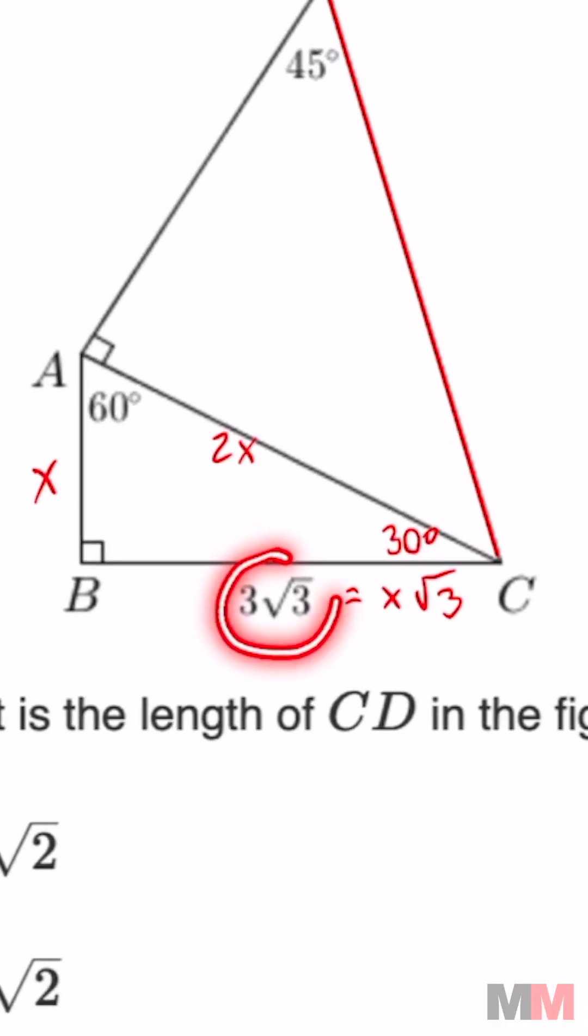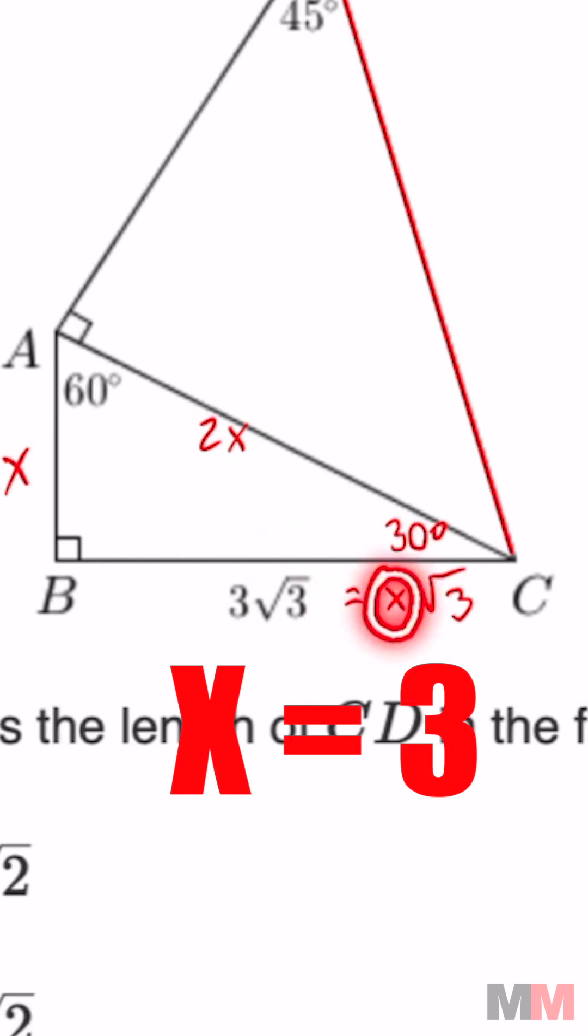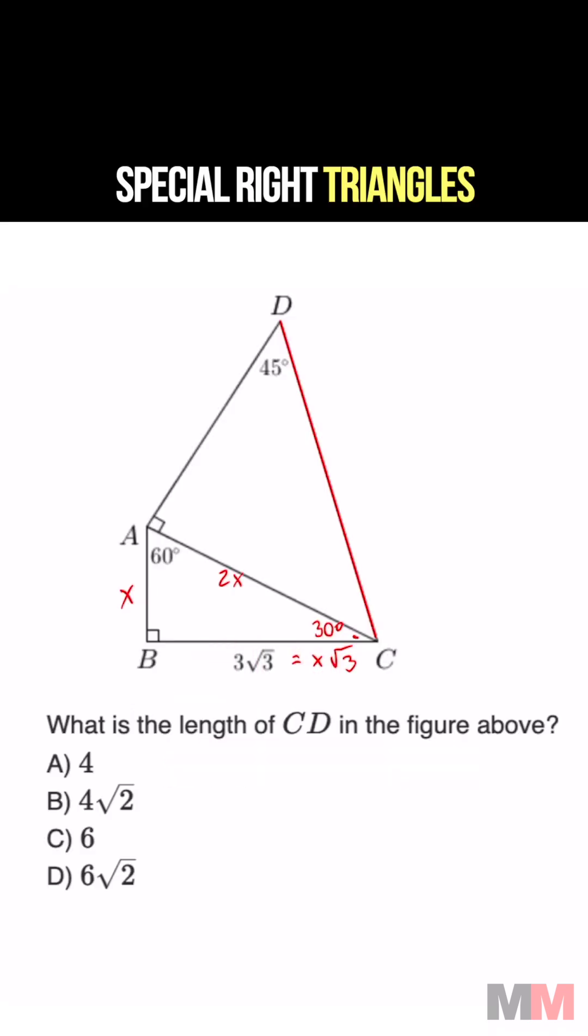So knowing that this is 3 root 3, that can only mean that X equals 3 for this triangle, which means that this part of my triangle is going to be 2X, which equals 2 times 3, 6.